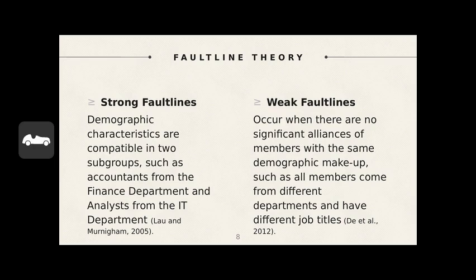You have strong fault lines and weak fault lines. Stronger fault lines are more likely to be activated if two or more recognizable subgroups are on a project team. If demographic characteristics are compatible in two subgroups — such as accountants from the finance department and analysts from the IT department — then this could be a telltale sign for a strong fault line. Weak fault lines occur when there are no significant members with identical demographic makeup, such as when all members come from different departments and have different job titles. These characteristics introduce different ideas or opinions about a particular project or goal. The more subgroup alliances that form, the higher the probability of the fault line theory to transpire.